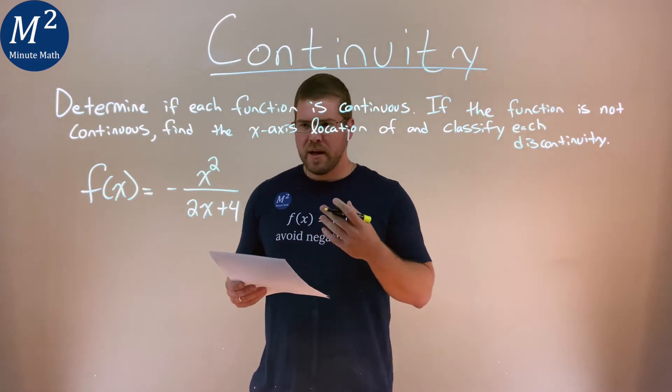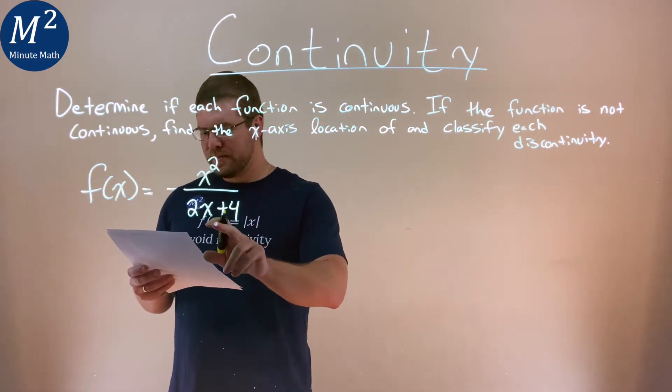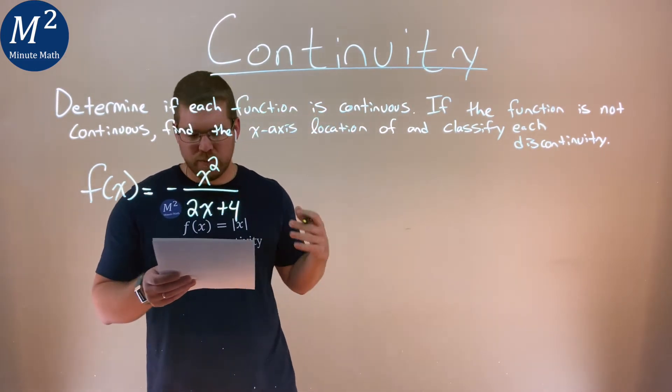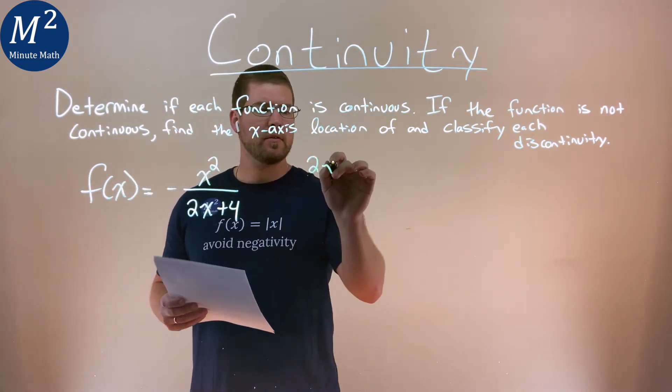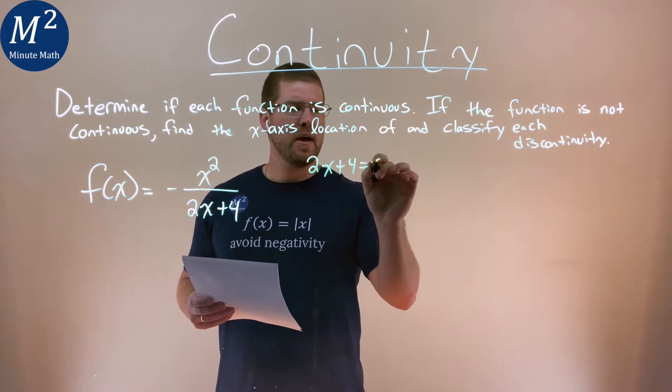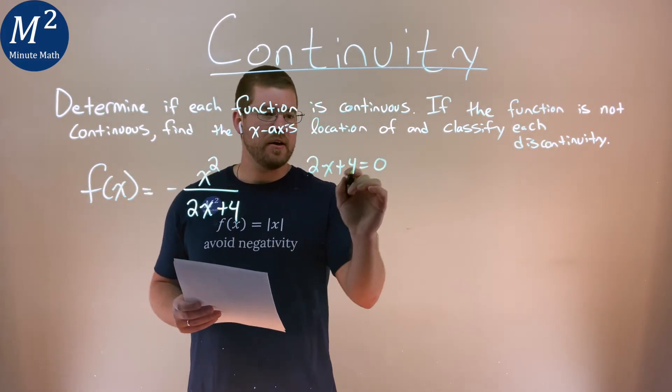Well, right here, one thing I notice is that we're divided by something that could be zero. So what I'm going to do is see where that equals zero. So I have 2x plus 4, and I set it equal to 0 to find the x value.